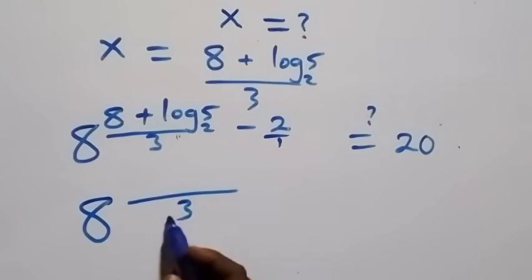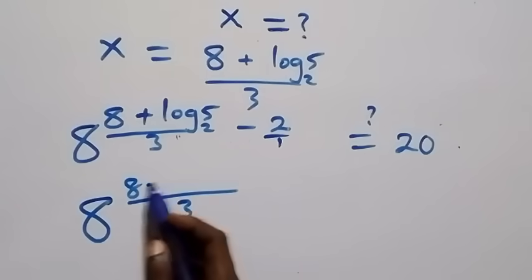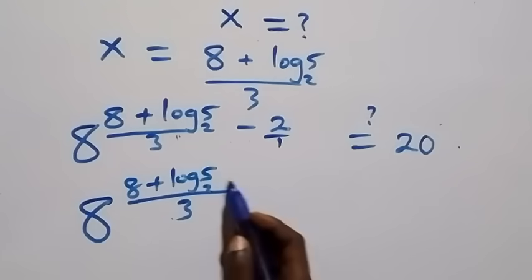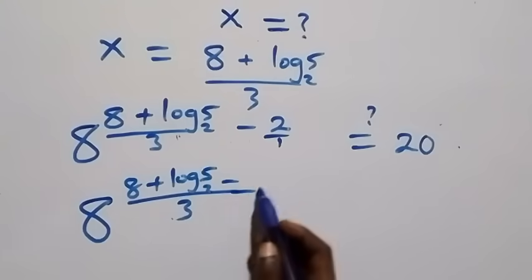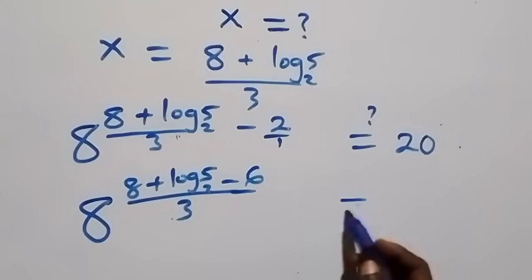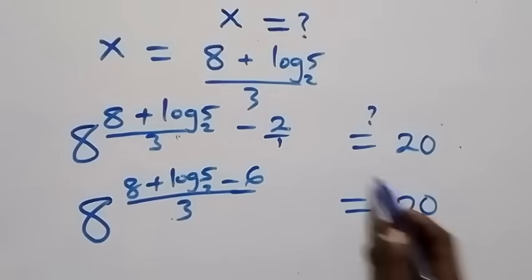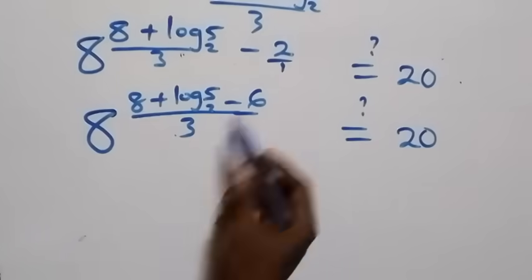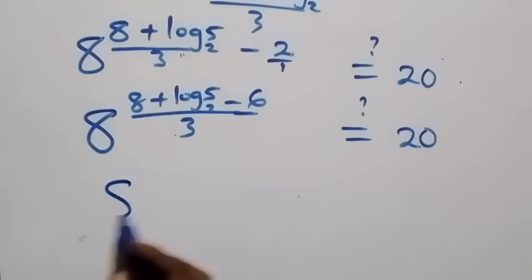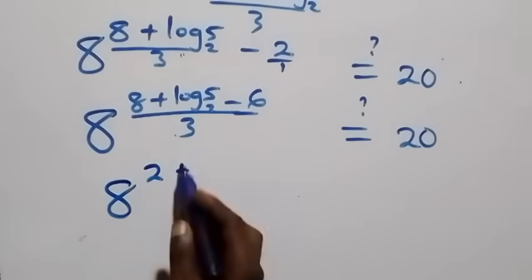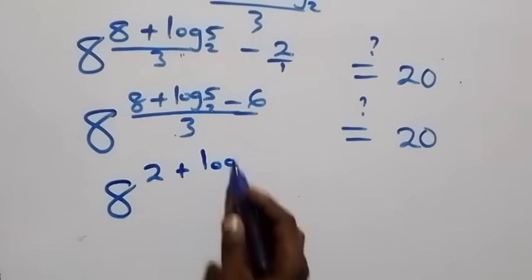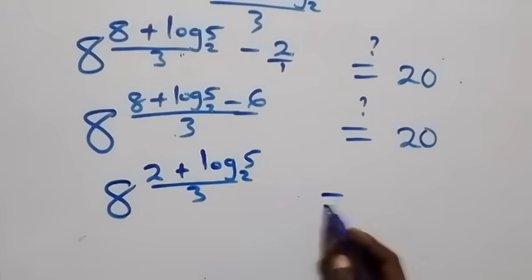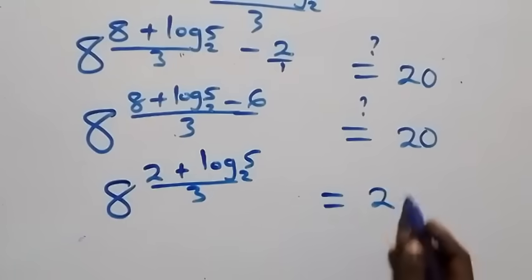We have 8 raised to power (8 plus log₂5)/3. Then minus 2 becomes minus 6 over 3, so we get 8 raised to power (8 plus log₂5 minus 6) over 3, which gives 8 raised to power (2 plus log₂5) over 3, and this should equal 20.